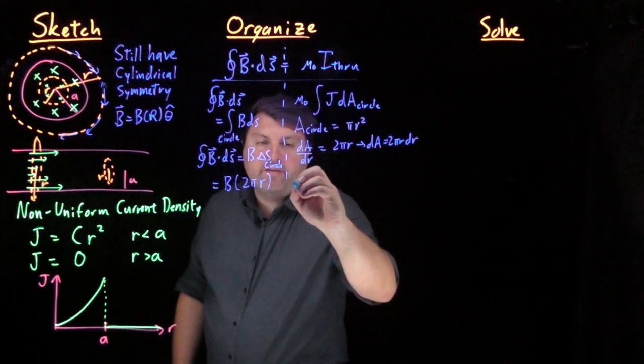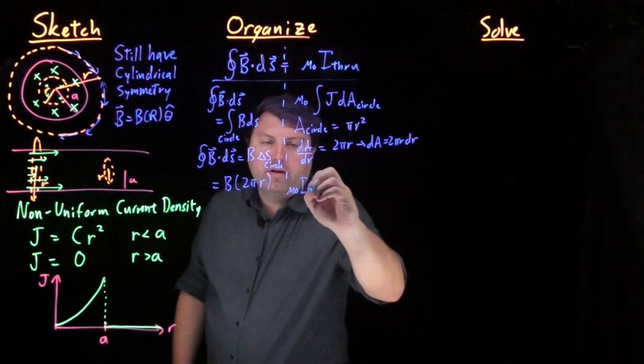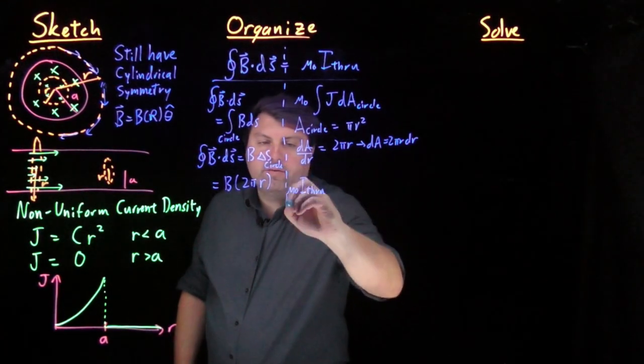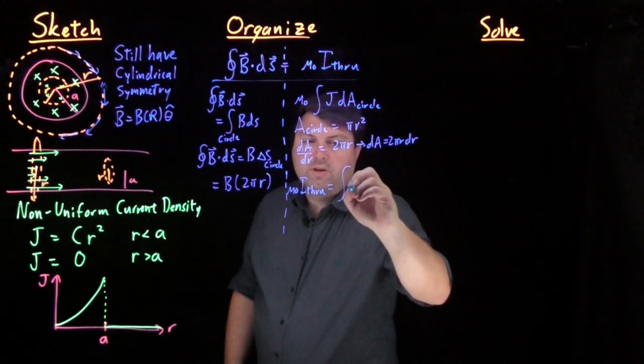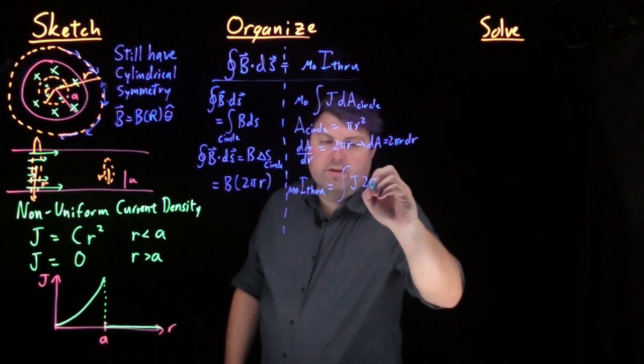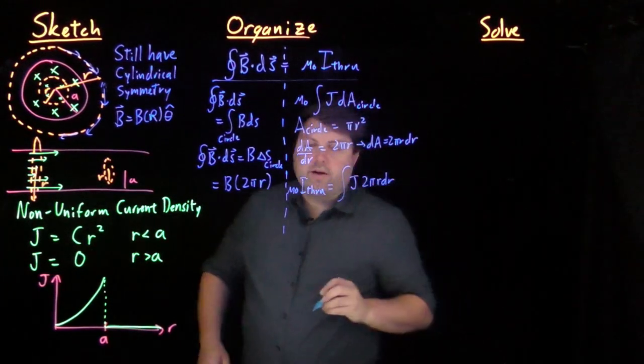So if we have this, then we have that our mu naught i through on this side is equal to our integral of whatever j is times 2 pi r dr.